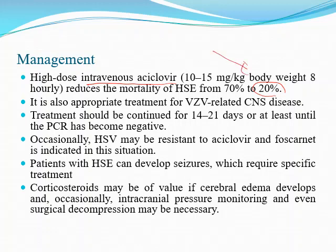Acyclovir is also a proper treatment for varicella zoster. The duration of treatment is 14 to 21 days — usually two weeks in adults, three weeks in pediatric age. The best approach is to do repeated PCR and continue antiviral therapy until the PCR becomes negative. If herpes simplex is resistant to acyclovir, foscarnet is indicated. Seizures must also be treated. Steroid is sometimes needed if there is cerebral edema, and occasionally intracranial pressure monitoring or even surgical decompression may be required.